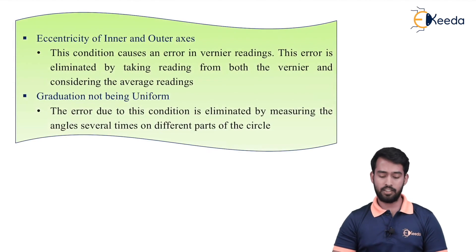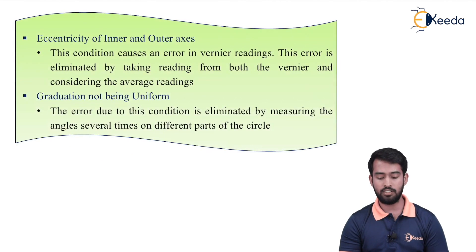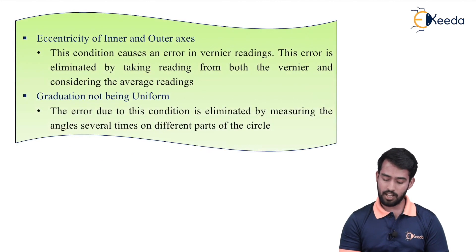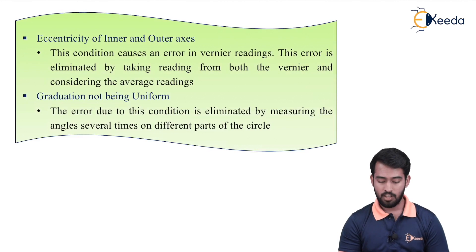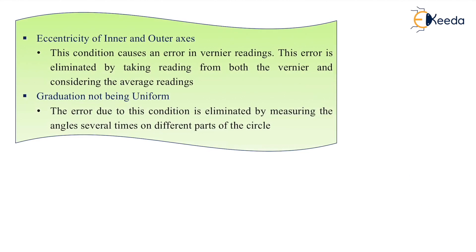Next is eccentricity of the inner and outer axis. This condition causes an error in vernier readings. The upper plate is known as the vernier scale and the lower plate is known as the main scale. This error is eliminated by taking the reading from both the verniers and considering the average reading.